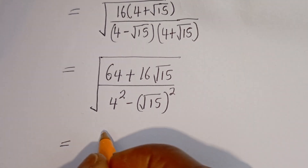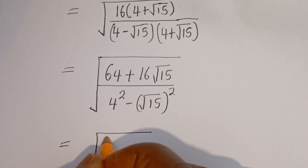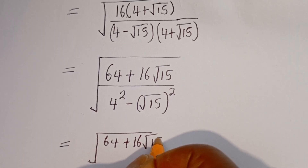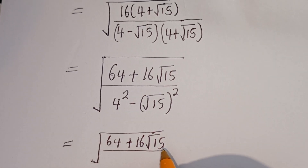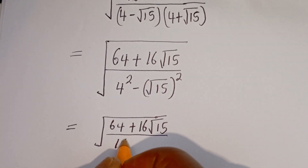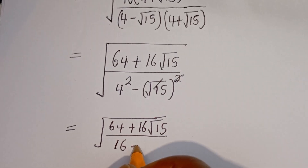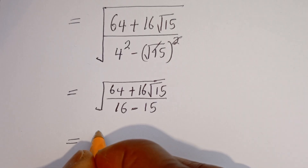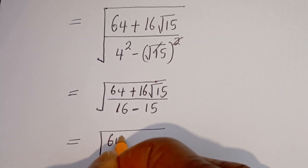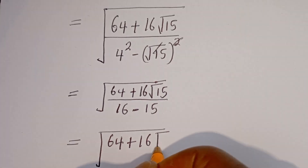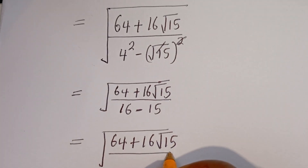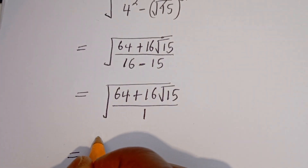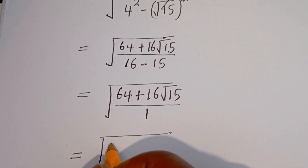This is equal to square root of 64 plus 16 root 15, divided by 4 squared, that is 16, minus 15, which equals 1. So we have square root of 64 plus 16 root 15 divided by 1.